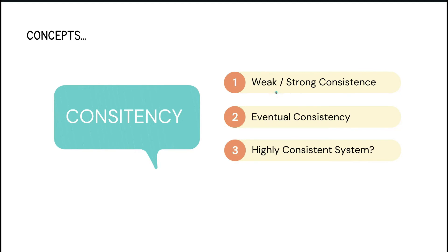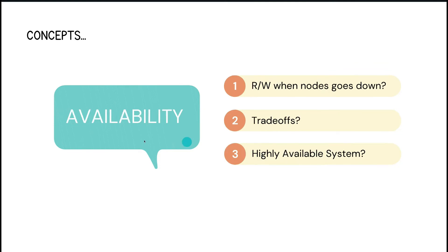Let's talk about consistency. You need to understand whether your system is weakly consistent, strongly consistent, or uses eventual consistency — which is the base property of a distributed system. For example, a banking system or airline reservation system should be highly consistent; there is no scope for inconsistency, otherwise there will be a lot of discrepancy. You can compromise availability but not consistency. On the other hand, systems like Facebook or video streaming should be highly available — it's okay to see a comment a few seconds later, but the system must not go down.